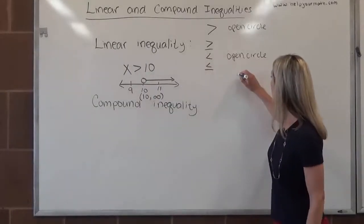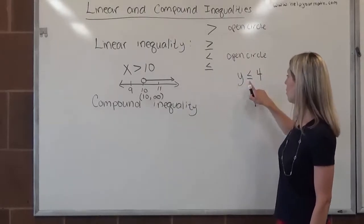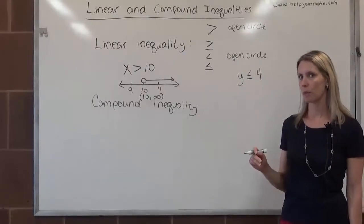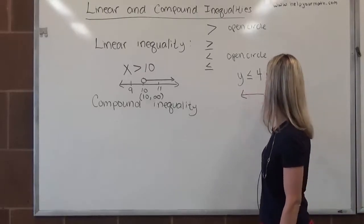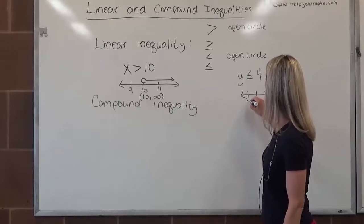If we look at another example, let's say y is less than or equal to 4. When we have the or equal to, when we're talking about our number line, we are going to use a closed circle.